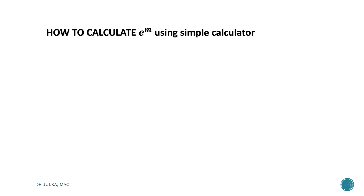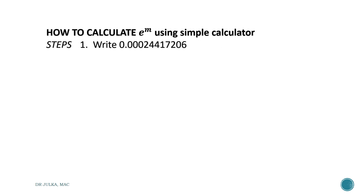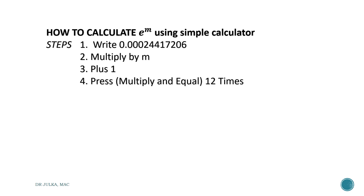How to calculate e raised to the power m using a simple calculator: First, write 0.00024417206 in your calculator. Multiply by m, then add 1. Press multiply and equal 12 times — that is, multiply and equal 1, multiply and equal 2, multiply and equal 3, and so on, 12 times.